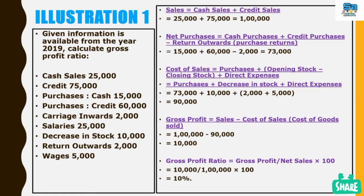We know the calculation formula of gross profit ratio is: gross profit divided by net sales, multiplied by 100. So we have to get the gross profit value and net sales value to calculate GPR, or gross profit ratio.